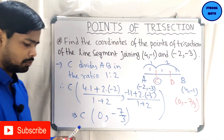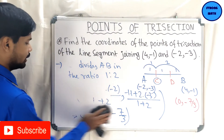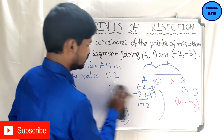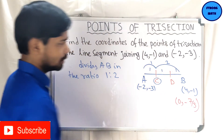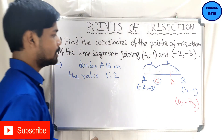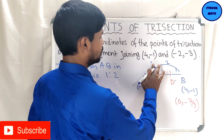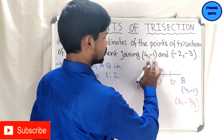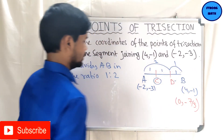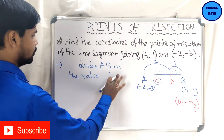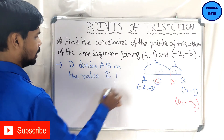Now, what about the coordinates of D? You can easily check in what ratio point D divides the line segment AB. The point D divides line segment AB in the ratio 2:1. So D divides AB in the ratio 2:1.